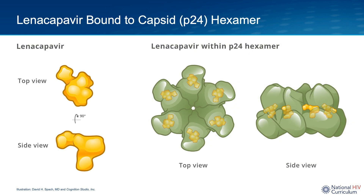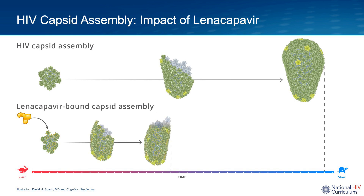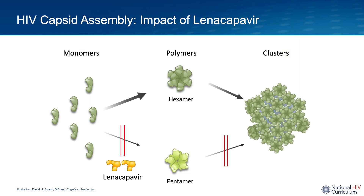So how does linacapavir impact capsid assembly? Multiple linacapavir molecules bind to capsid hexamers, creating hyperstable subunit structures. When linacapavir is bound to the capsid proteins, it has two important effects: first, it accelerates the normal polymerization process; second, it enhances the stiffness and rigidity in the developing capsid shell scaffolding. The end result is accelerated capsid assembly that consists of hyperstable, aberrantly shaped tubular structures that typically do not close. There are also recent data suggesting that linacapavir may block formation of capsid pentamers, which would disrupt capsid architecture since pentamers play a key role in the capsid scaffolding enclosure.